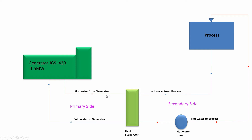Hot water from the generator moves to the after-recovery heat exchanger, where it exchanges heat with the cold water of the process. When its temperature drops, the cold water moves back to the generator to maintain the body temperature of the generator. On the secondary side, cold water from the process moves to the heat exchanger, absorbs heat from the jacket water, and moves back to the process — saving fuel consumption used to heat this process water.